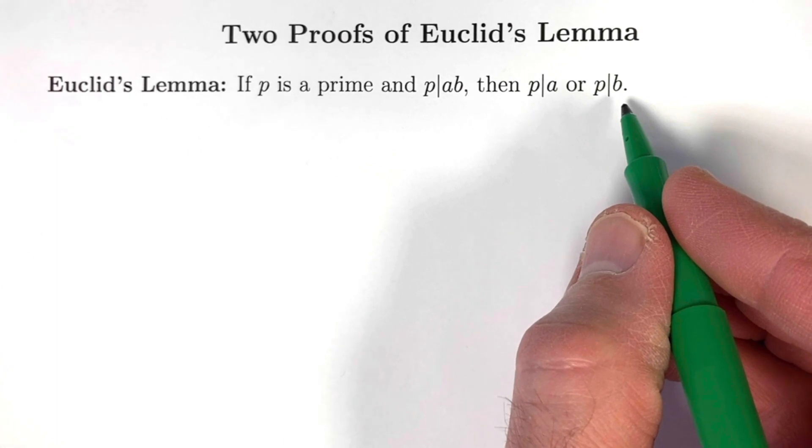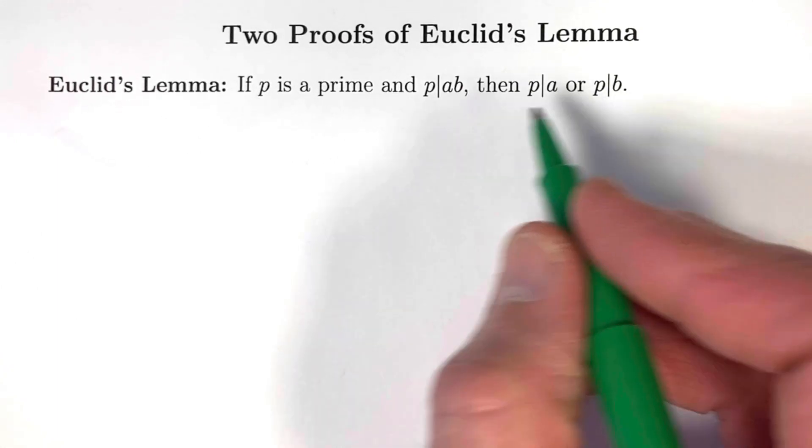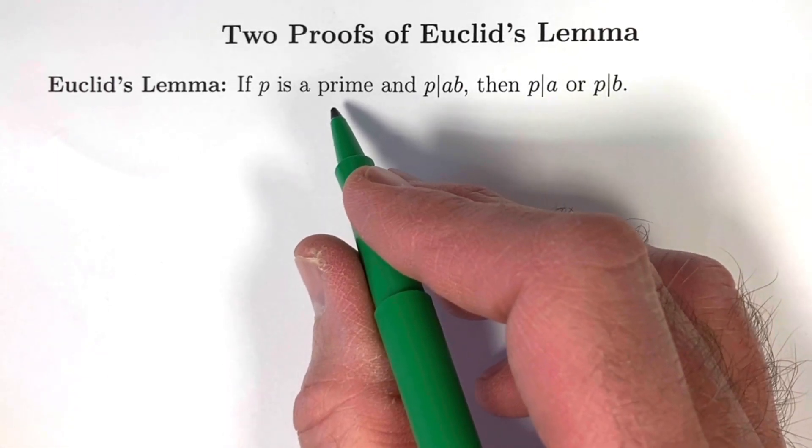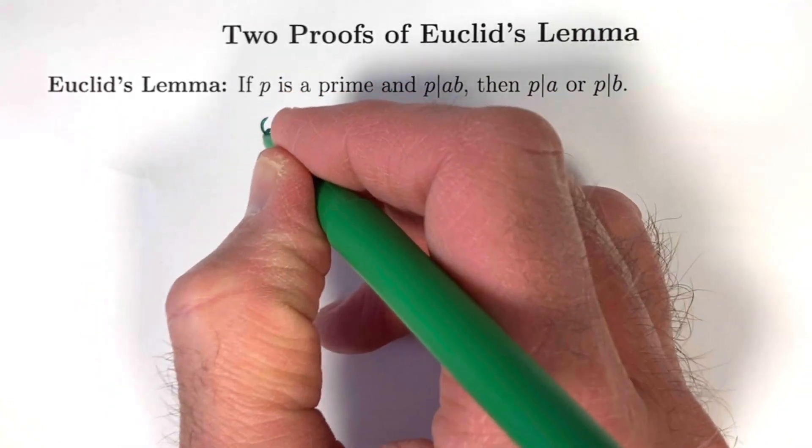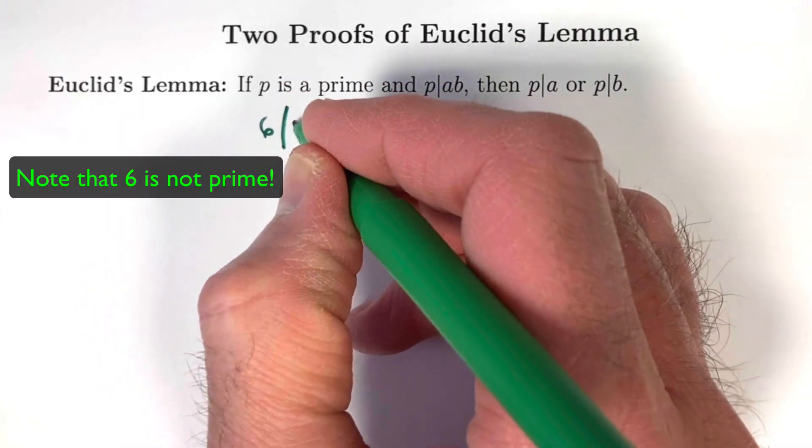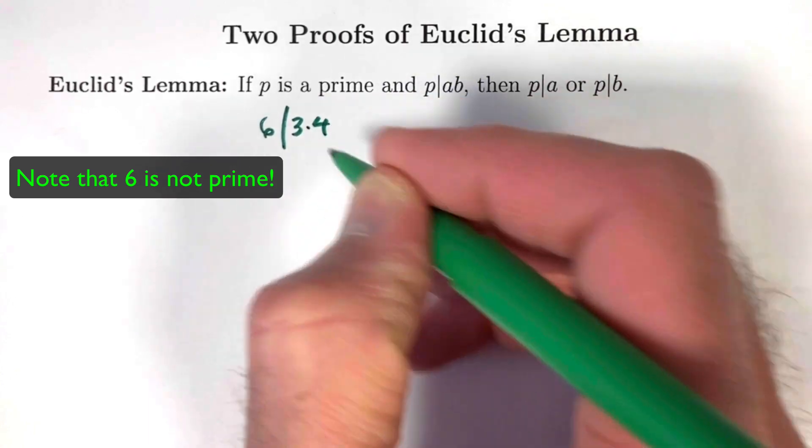Before we look at either of these proofs, let's take a moment to notice the assumption that p is prime is a necessary assumption. For example, if p is 6, 6 does happen to divide 3 times 4, which is 12.